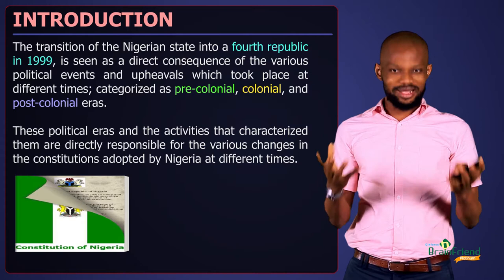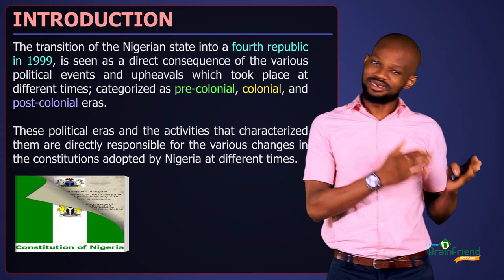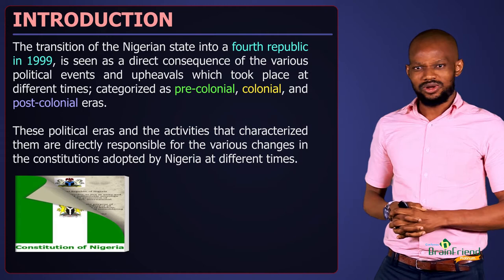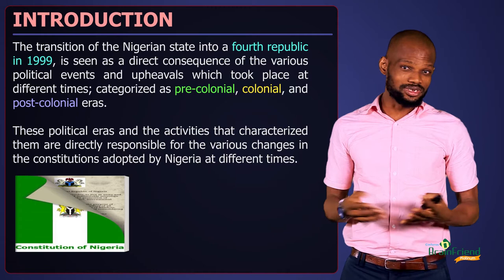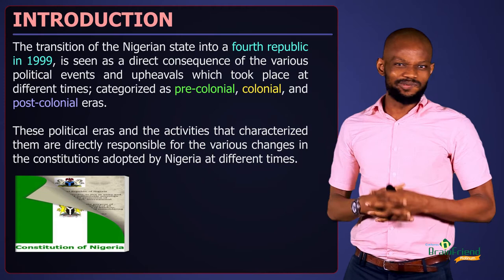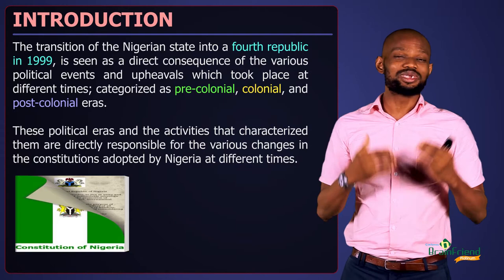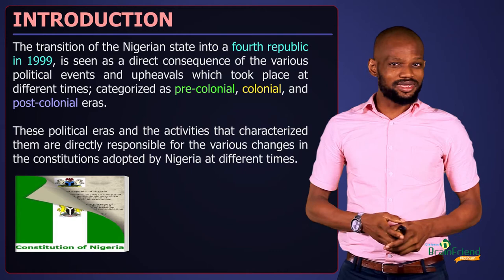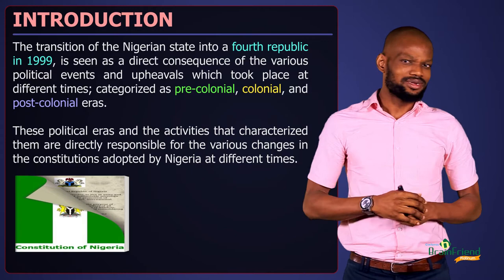These constitutions are categorized into pre-independence constitutions and independence or post-independence constitutions. Pre-independence constitutions are constitutions which date from 1914 when Nigeria was amalgamated till 1956 — constitutions which came before 1960 when Nigeria got her independence. We shall also look at the features of these constitutions and see the problems with each of them and why they had to be changed from time to time.